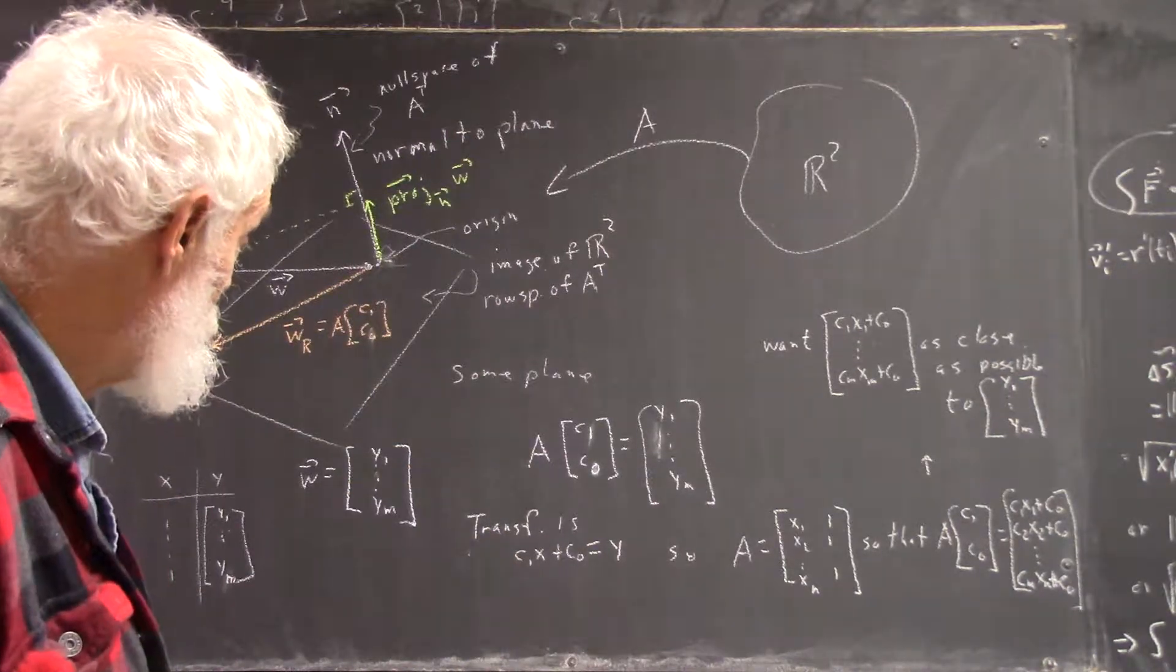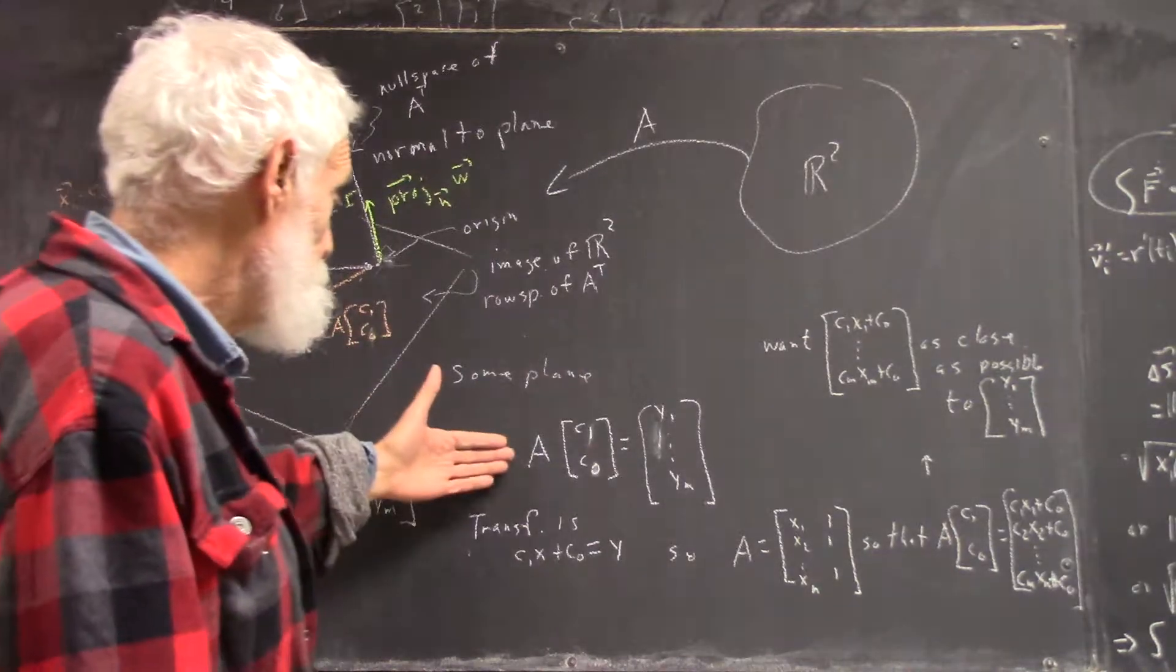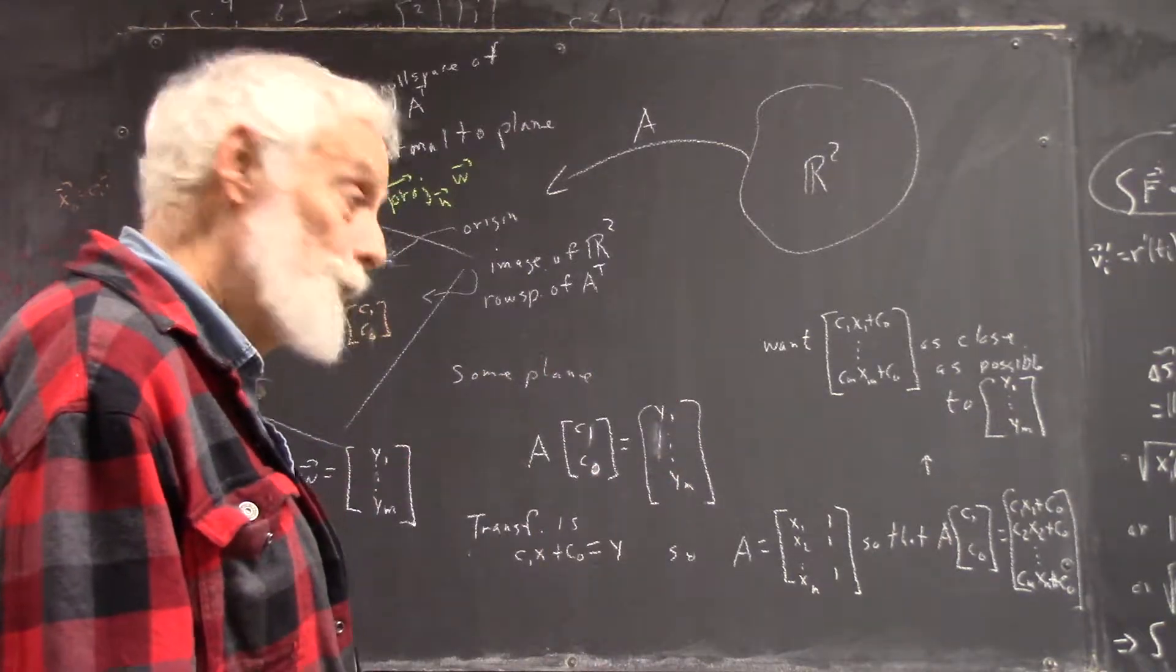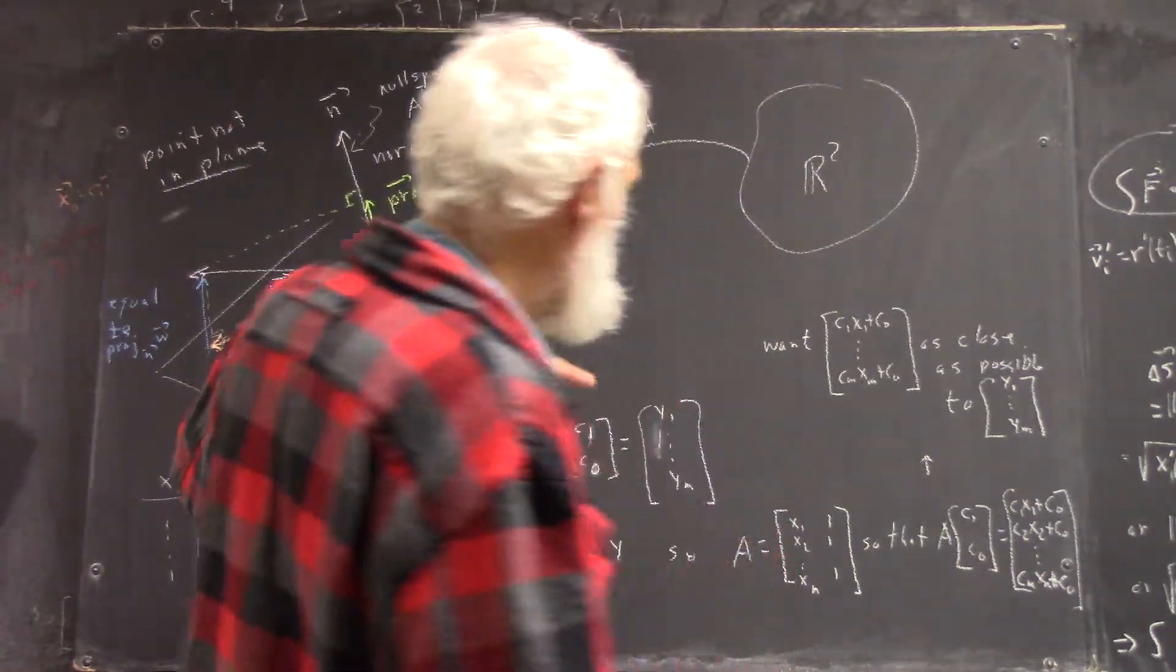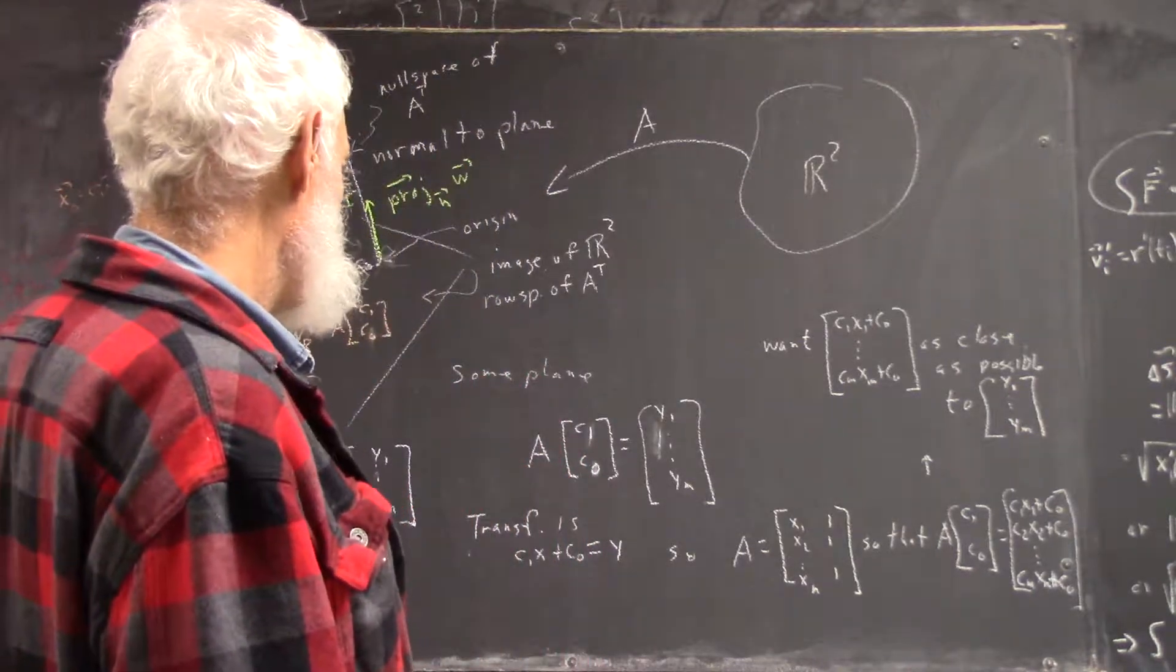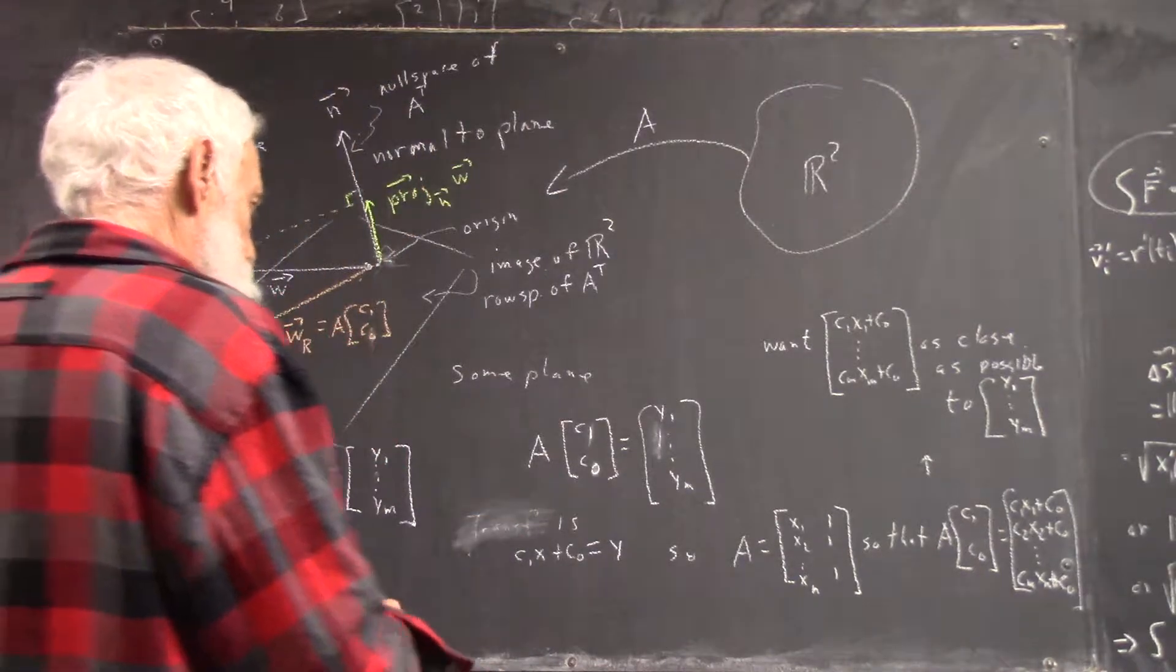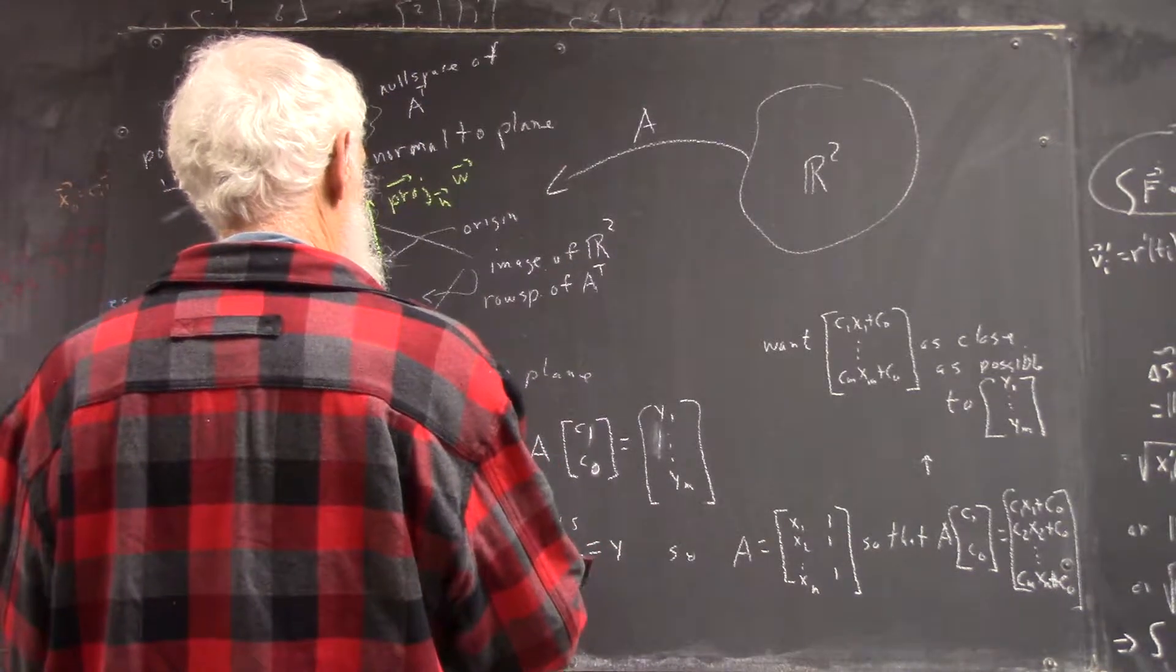Okay, well, anyhow, so again, our transformation is A multiplied by some C1 C0 should equal Y1 through YM. Why is that? Well, because we want parameters. I said our transformation, same as the wrong words.